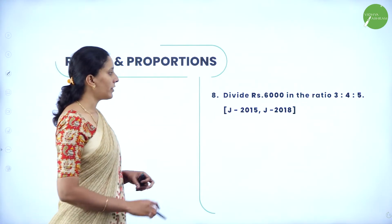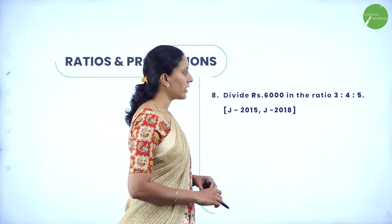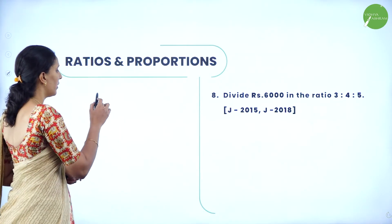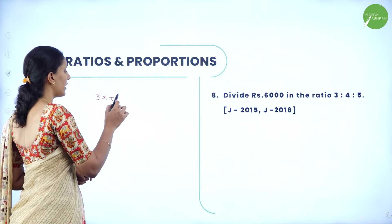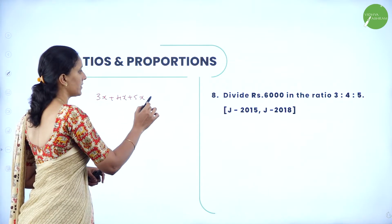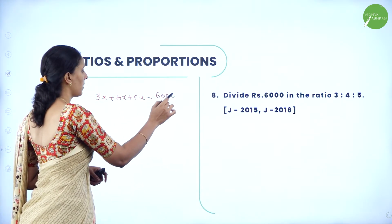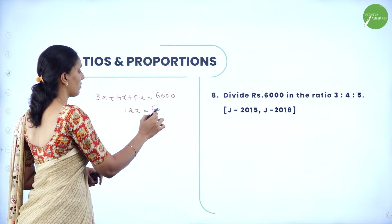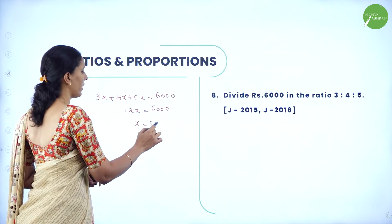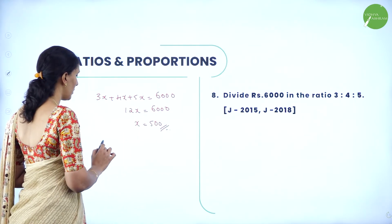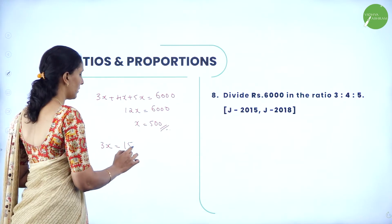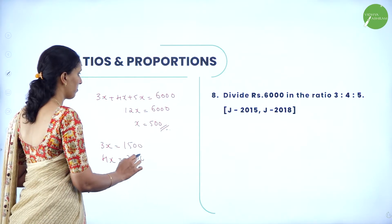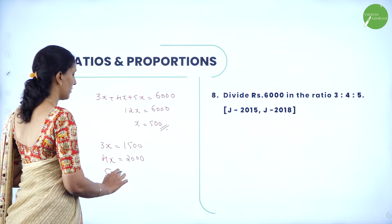Next: divide rupees 6000 in the ratio 3 is to 4. The parts are 3x and 4x, so 3x + 4x = 6000, giving 7x = 6000 and x = 500 (approximately). Therefore 3x = 1500 and 4x = 2000.